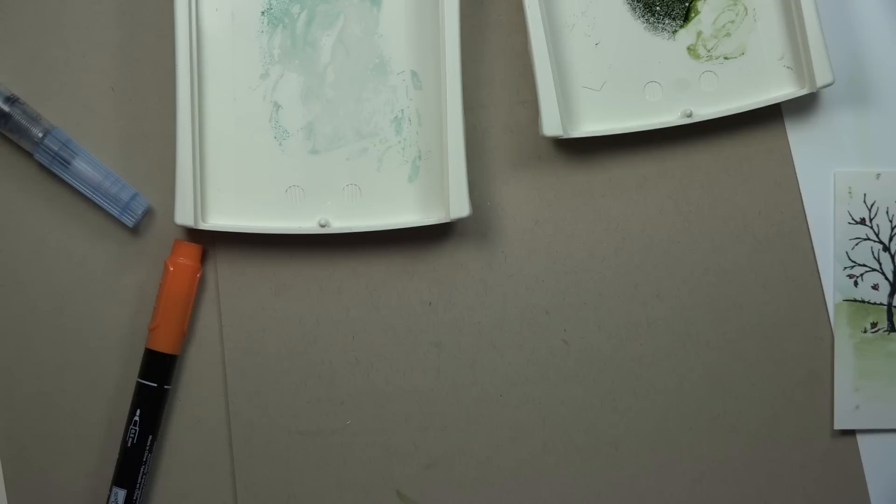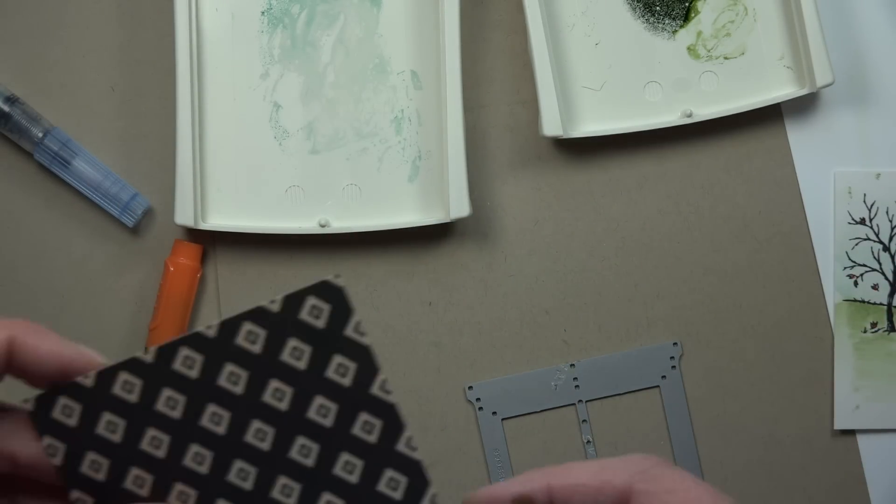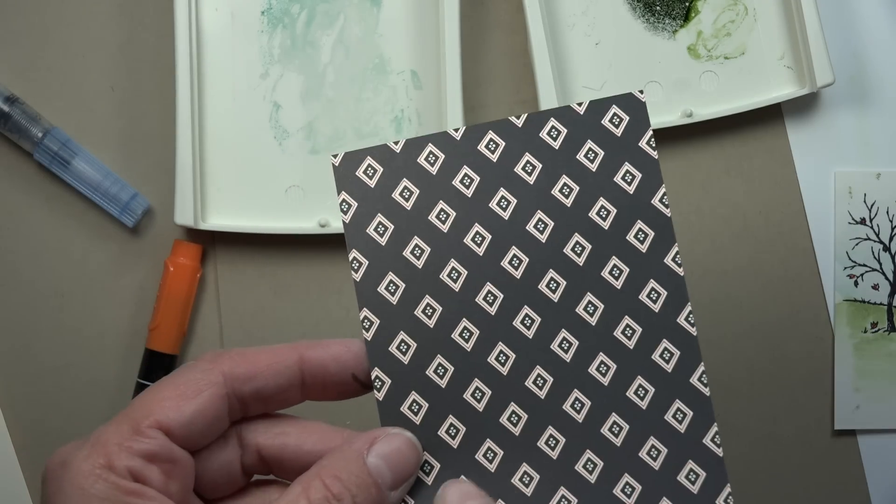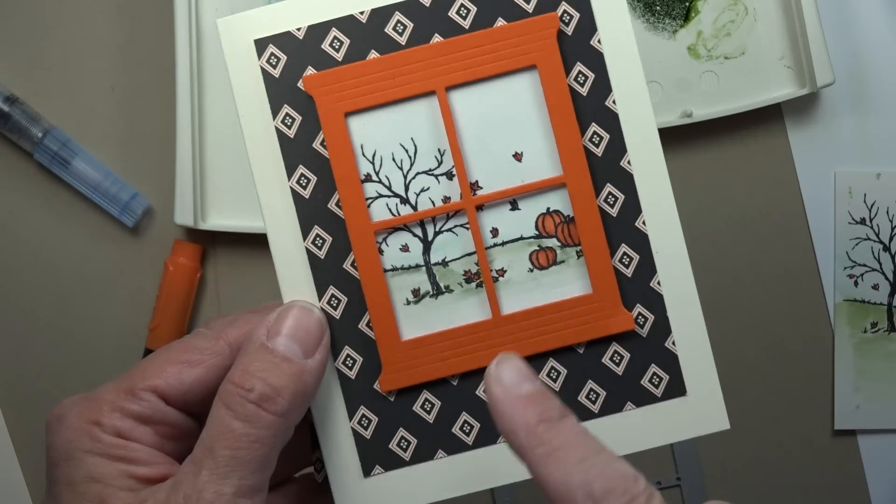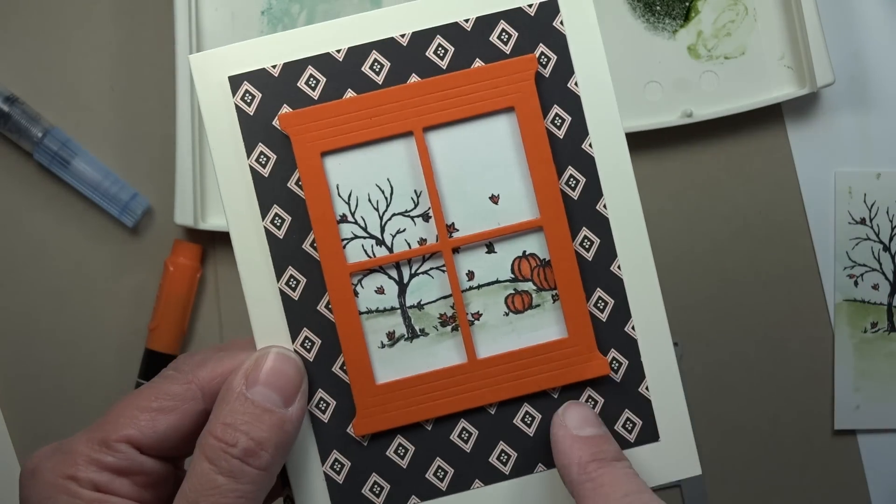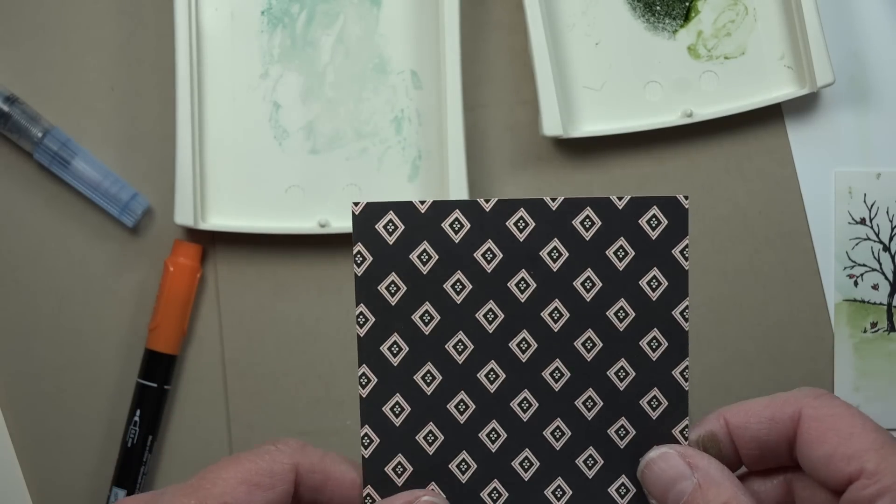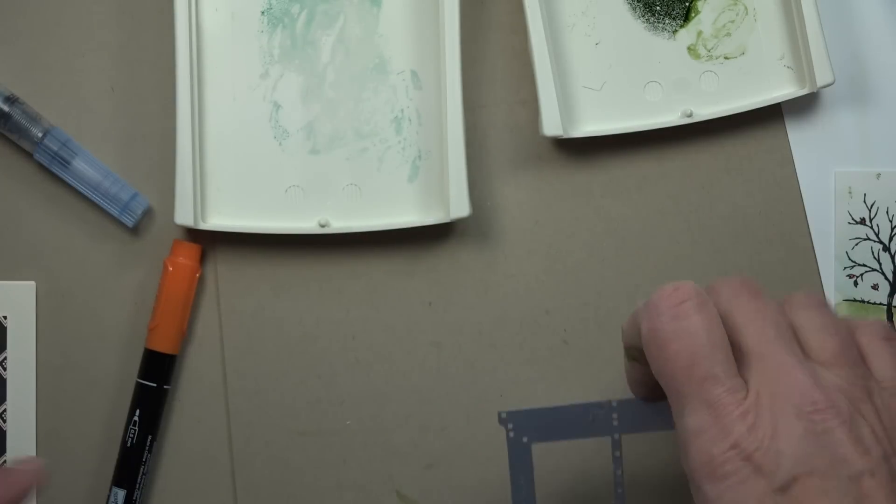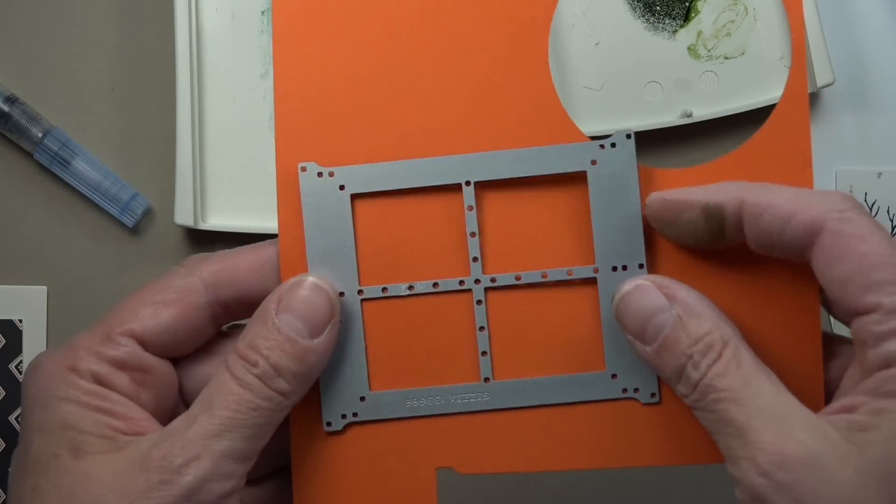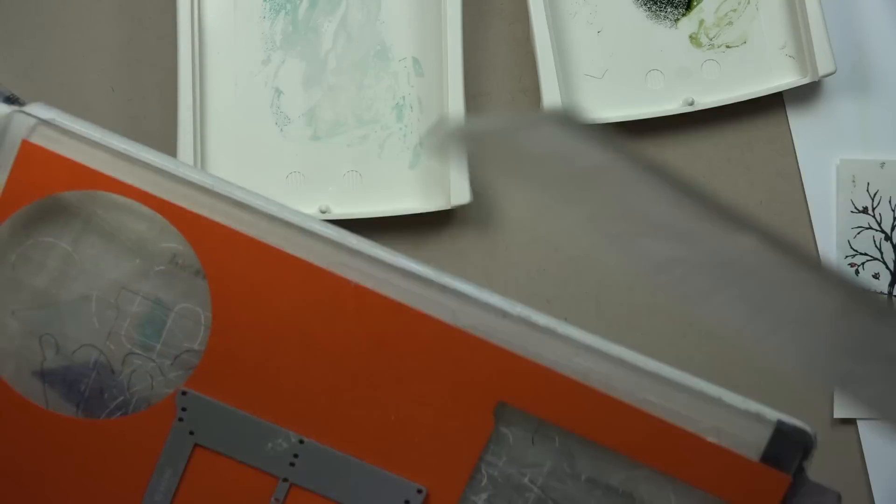And then what I did is I actually came in with that framelit set. Of course it comes with the window and the windowsill. I'm just going to use the window for this project. I'm using a piece of the happy haunting designer series paper and I like this because it kind of looked like old wallpaper and that's what I wanted it to look like. I wanted it to look like you're looking outside the window and this is the wallpaper of the house. So this is going to get attached directly to my piece of cardstock with some snail adhesive and then I'm going to go ahead and cut the window out. I'm using tangelo twist and I'm just going to run this through my big shot and cut out a window.